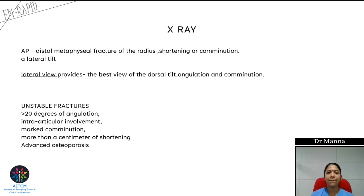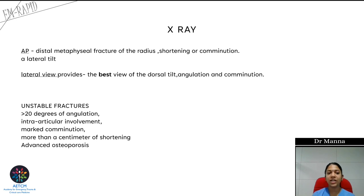On AP X-ray, a distal metaphyseal fracture of the radius is seen with shortening and lateral tilt. On lateral view, dorsal tilt and angulation are seen. A fracture is considered unstable if there is more than 20 degrees of angulation, intra-articular involvement of the radiocarpal or radio-ulnar joint, marked comminution, more than 1 cm shortening, or advanced osteoporosis.